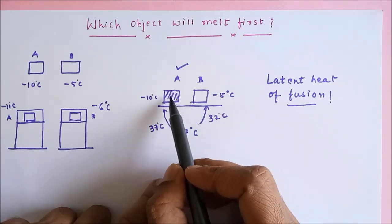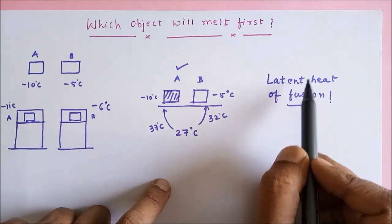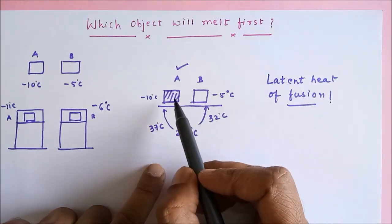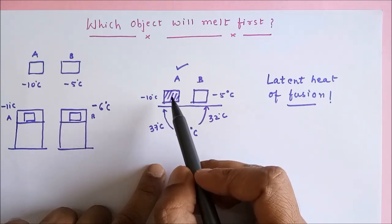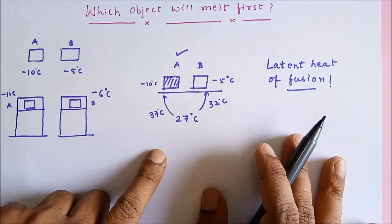If A has got more latent heat of fusion than B, then obviously, even though it has got less melting point, this object may require longer time to melt. So our answer to this problem is quite simple if we ignore this fact.